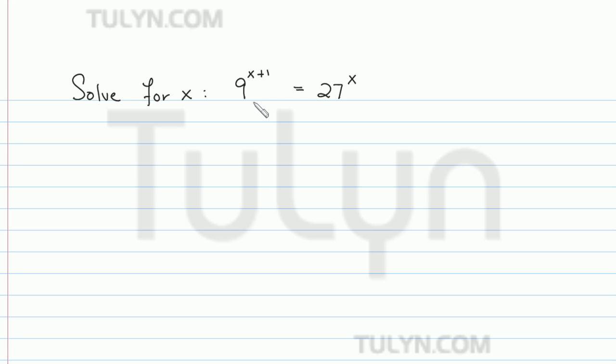Now notice that 9 can be written with a base of 3, it's 3 squared, and 27 can also be written with a base of 3. In other words, it's 3 cubed.